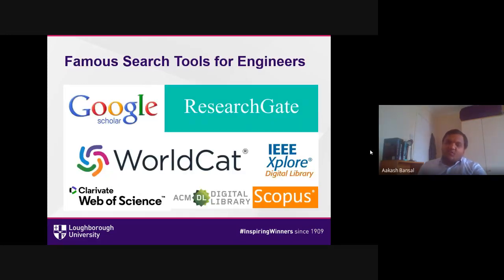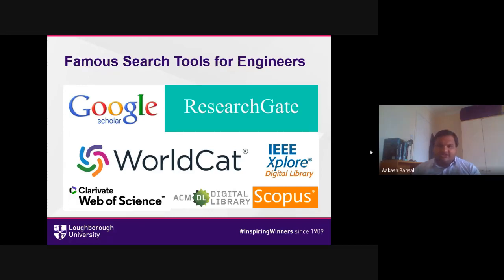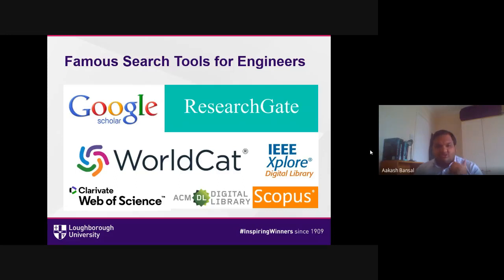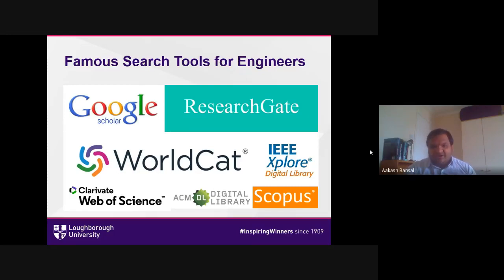Where to look for papers: Google Scholar is one of the best places as it has access to almost all directories. IEEE Xplore is the major publishing house for engineers. ACM is for computer science. Scopus, Elsevier, and Web of Science cover engineering, computer science, physics, chemistry, and biology. WorldCat is a very interesting website — type the subject you're looking for and it gives links to all related books and papers, and if you want a hard copy, it shows nearby libraries where you can find that book.